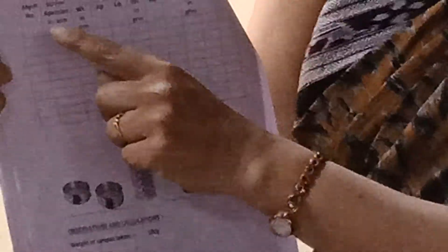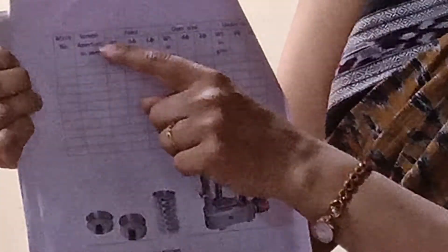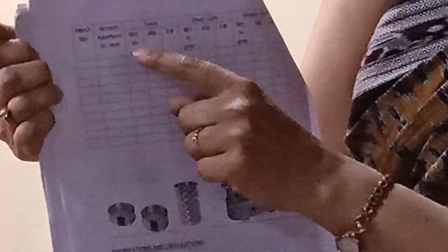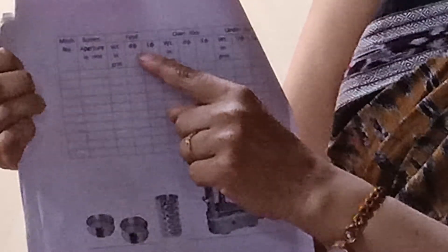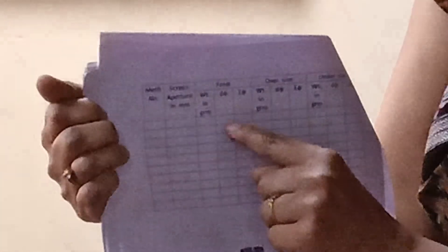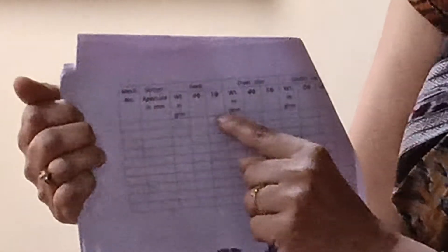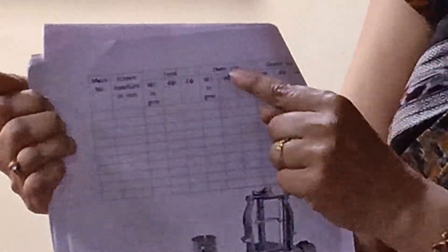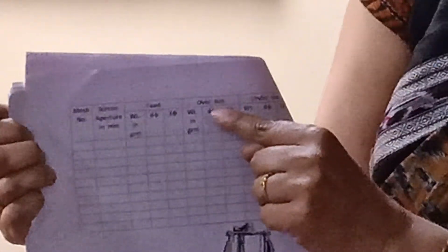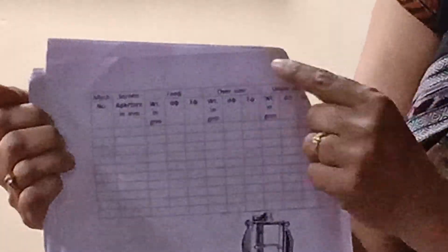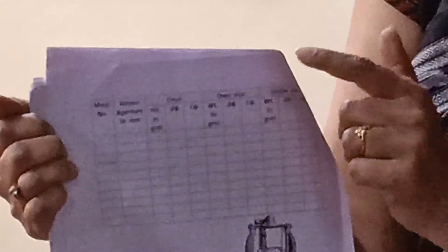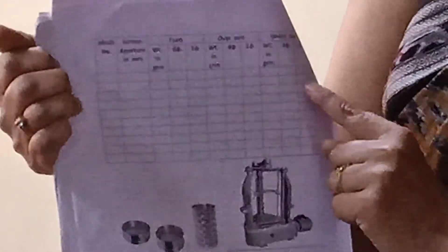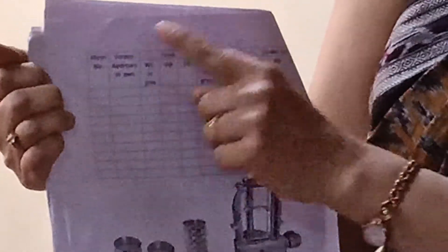This is how the tabular column looks. You write the mesh number, then the screen opening is given. Then you tabulate the feed material weight retained on each screen, find out the weight fraction denoted as B5, and then the cumulative weight fraction — which is the weight fraction of the first added to the weight fraction of the second, and so on. You do this for the oversized material and also for the undersized material screened from the particular screen whose effectiveness has to be found out.